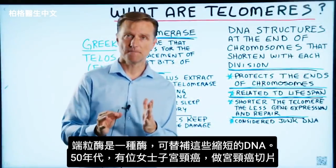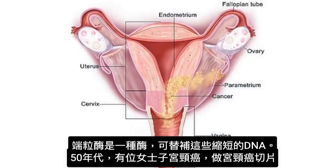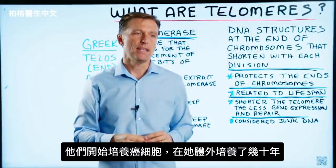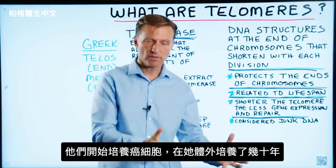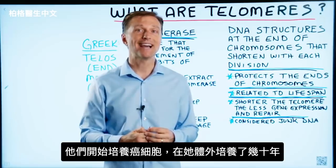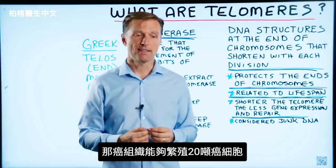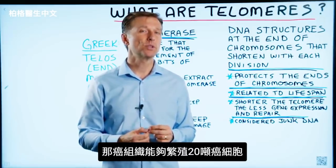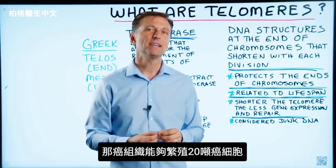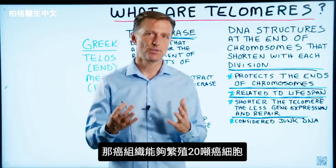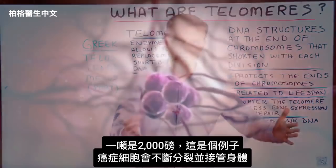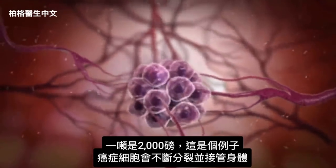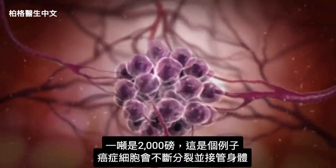In the 1950s, there was a lady who had cervical cancer. They extracted this cervical cancer and started to reproduce these cells out of her body over and over, over a period of decades. That cancer was able to reproduce 20 tons of cancer cells — and one ton is 2,000 pounds. So that's an example of what happens with cancer cells that keep dividing and just take over the body.